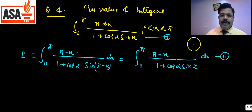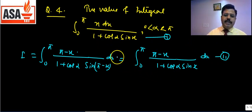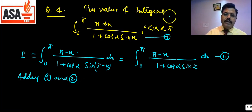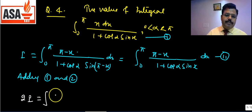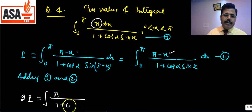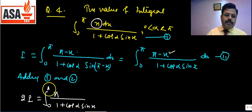Adding the original equation (call it Eq. 1) and the new equation (Eq. 2): the x and (−x) terms cancel in the numerator, giving 2I = π·∫₀^π dx/(1 + cosα·sinx). The limit remains 0 to π.